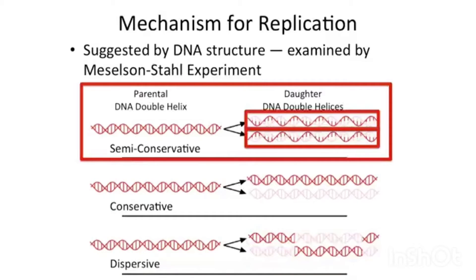In semi-conservative replication, you retain the integrity of the individual strands of the parent double helix. But separation of these strands is paired with synthesis, so you conserve one strand from the parent and create a new strand paired with it. This mechanism was proposed by Watson and Crick and confirmed by Meselson and Stahl — that is, each individual strand serves as the template for construction of a complementary strand, producing two daughter DNA helices with the same sequence as the parent.